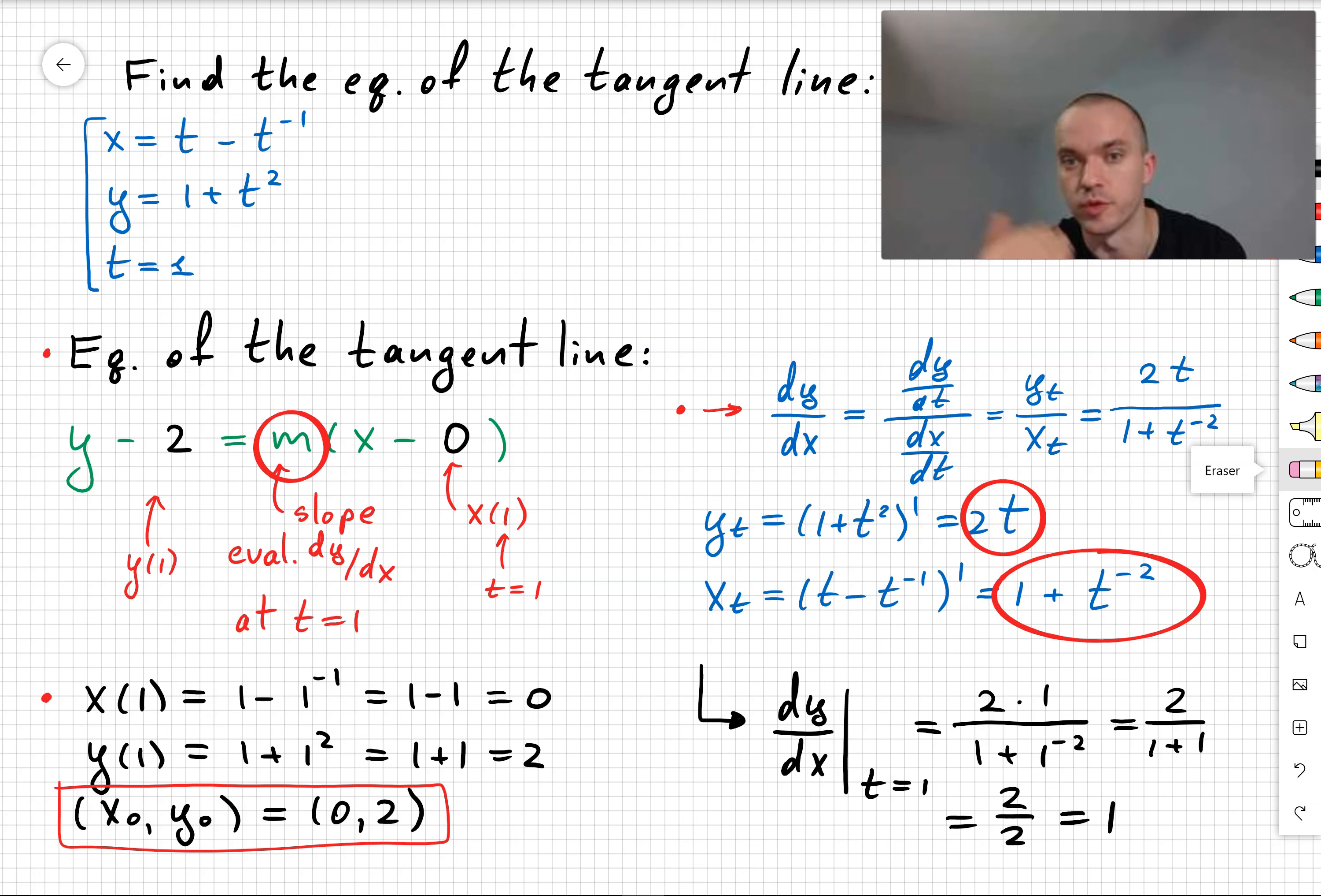Now we need to evaluate our derivative at t equals 1. We obtain 2 over 2, which is 1. In other words, our slope m equals 1.